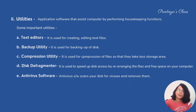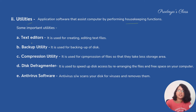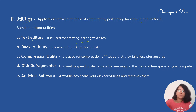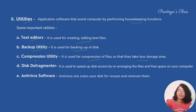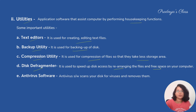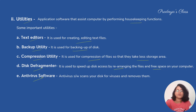The second category of application software is utilities, which perform housekeeping functions for the computer. There are many utility software types: a text editor for creating and editing text files; backup utility for taking disk backups; compression utility to compress files so they take less storage space; a defragmenter to rearrange files and free up space on the computer; and antivirus software to scan your disk for viruses and remove them.